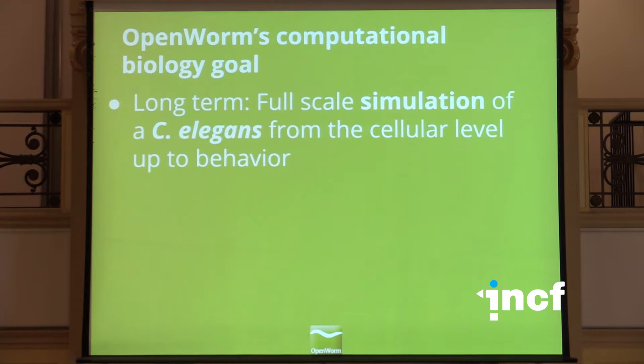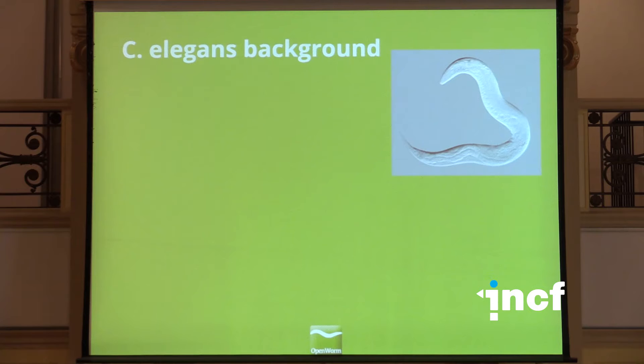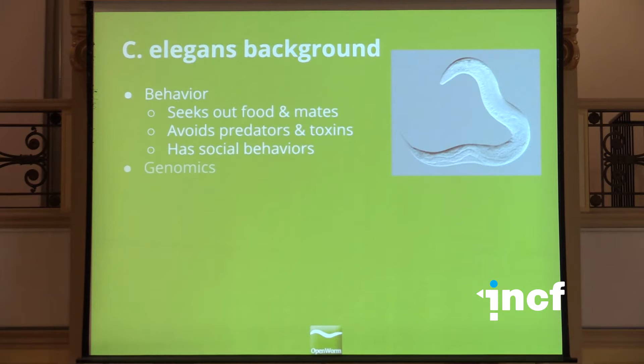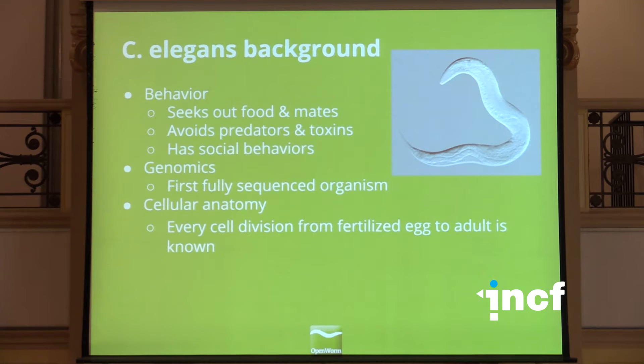The project OpenWorm's long-term goal is to create a digital simulation of the organism C. elegans from a cell-by-cell manner up to behavior. C. elegans actually does have some interesting behaviors for such a small organism — it's microscopic, about as long as a hair on your head is wide. It searches for mates, avoids predators deftly, has social behaviors, and groups up with other worms. It's the first organism for which we had a complete genome sequence, and we know every cell division from a single egg out to the full adult.